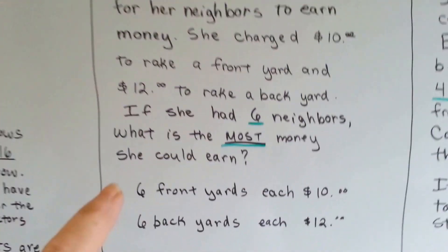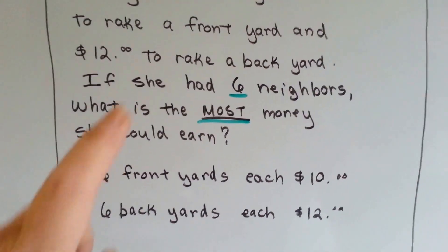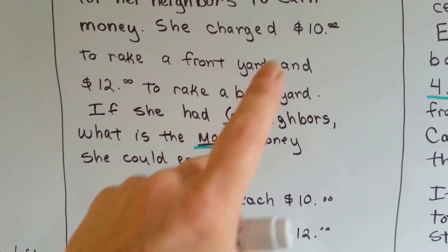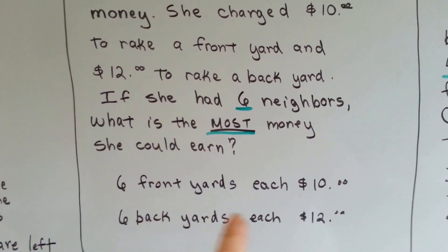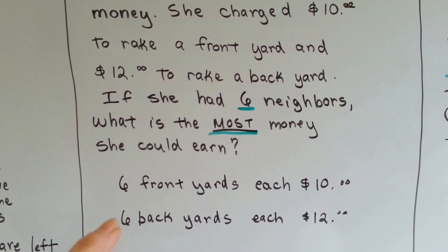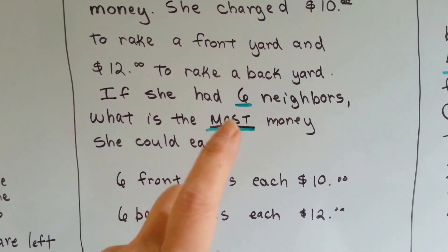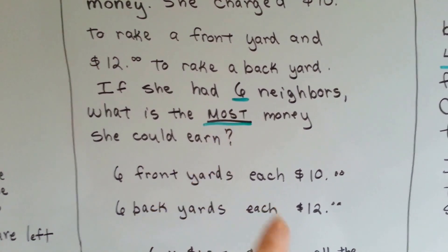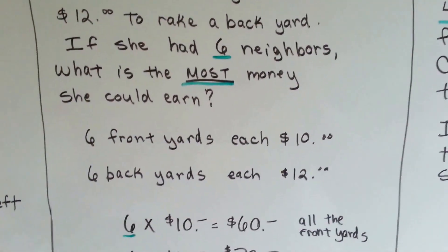Well, what we're going to do is, we're going to make sure we have our information. Ten dollars to rake a front, twelve dollars to rake a back, and she has six neighbors. So that's six front yards and six back yards. We want to find the most money she could make, which means she would have to do all the neighbors' yards front and back, right?